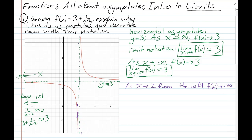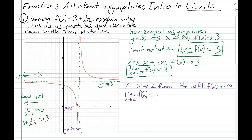The way to write this with limit notation: the limit as x approaches 2 with a little minus — meaning x approaches 2 from the negative side — of f(x) equals negative infinity. So the y-coordinates down here on that side of the vertical asymptote are approaching negative infinity.